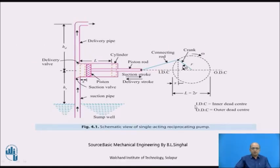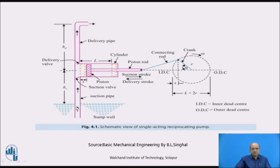Now we will see regarding the single-acting reciprocating pump. Basically these pumps are used for lifting water from a low level to a high level or delivering water from one point to another point. When we consider the construction of this reciprocating pump, it has a similar construction as compared to an IC engine.